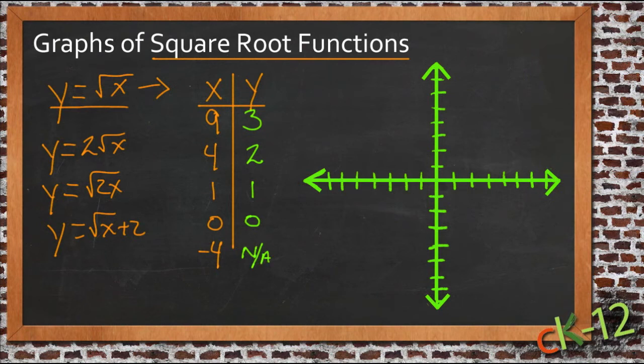So what we'll do then is take these values that we have, we'll graph them over here on our graph. If x is 9, y is 3. So we have a point clear over here right by the right side of the screen there.